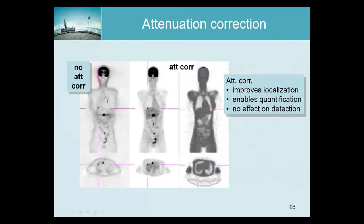The advantage is that we measure the attenuation at exactly 511 keV, which is exactly what we need. If you don't correct a non-TOF PET image for attenuation, you get a horrible image. For example, the lung appears slightly more active than surrounding tissues, while in reality it's the other way around. The liver appears almost uniform, while in reality there is a liver lesion making it non-uniform — cold in the center and hotter at the outside. The skin always looks very active, which is not true at all. This image is by no means quantitative.